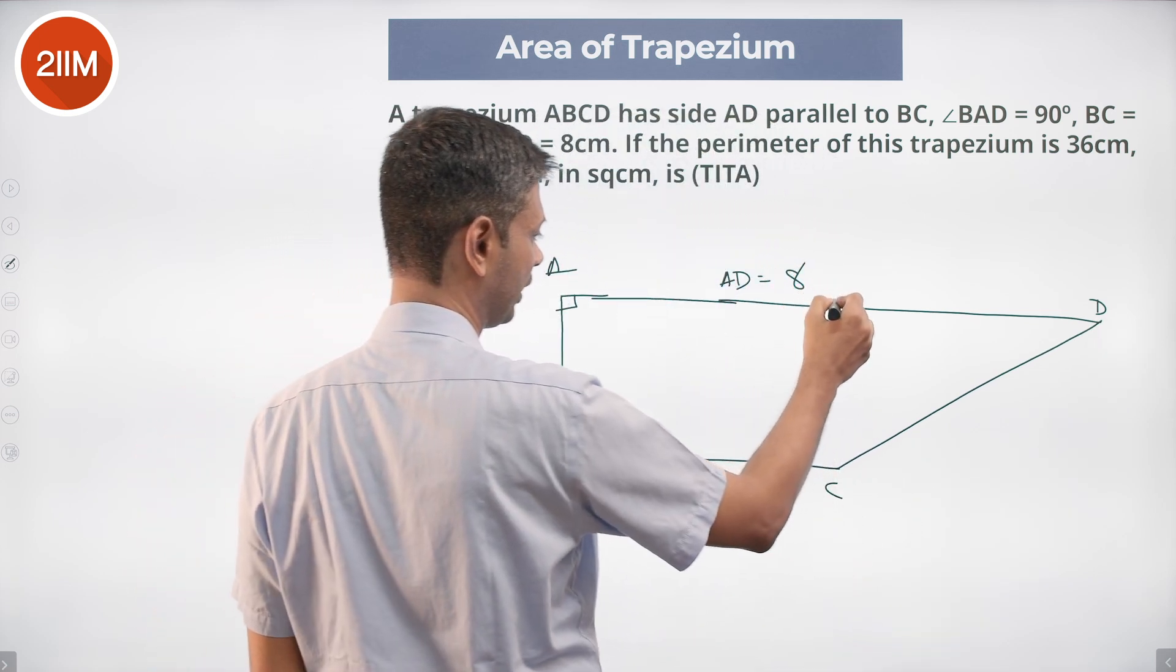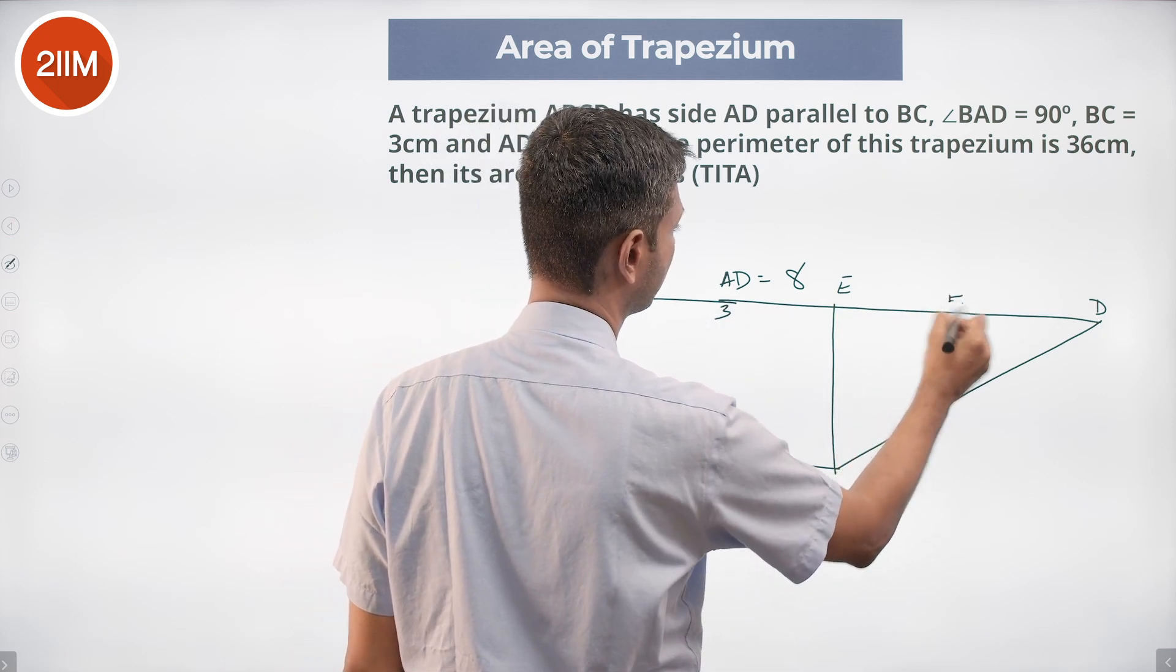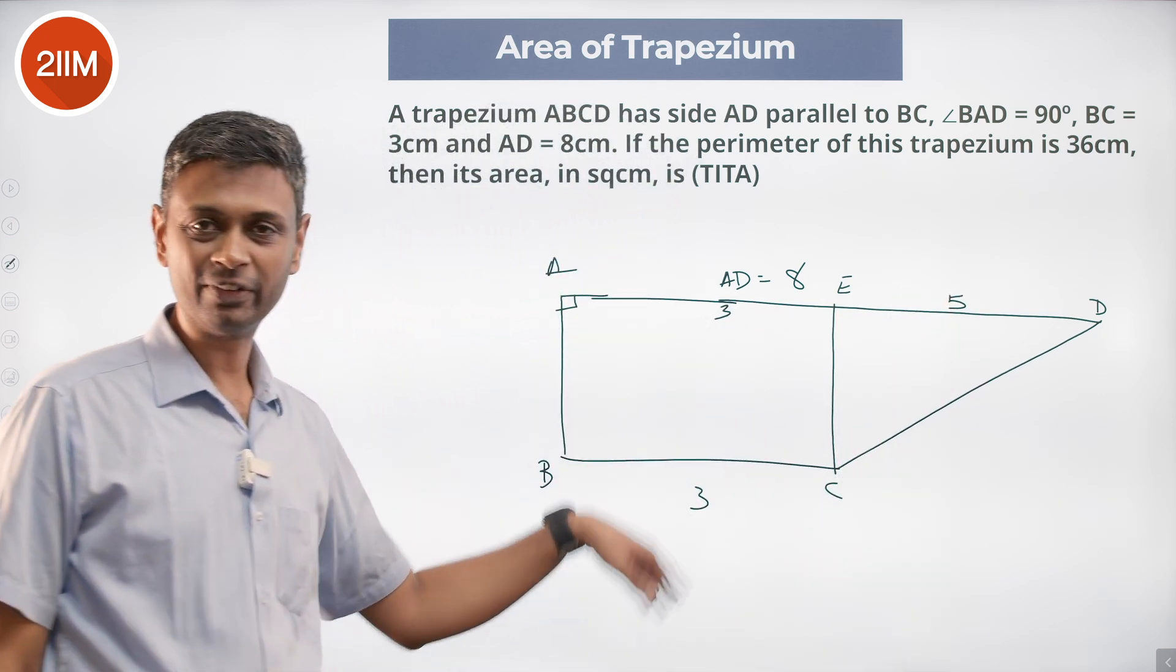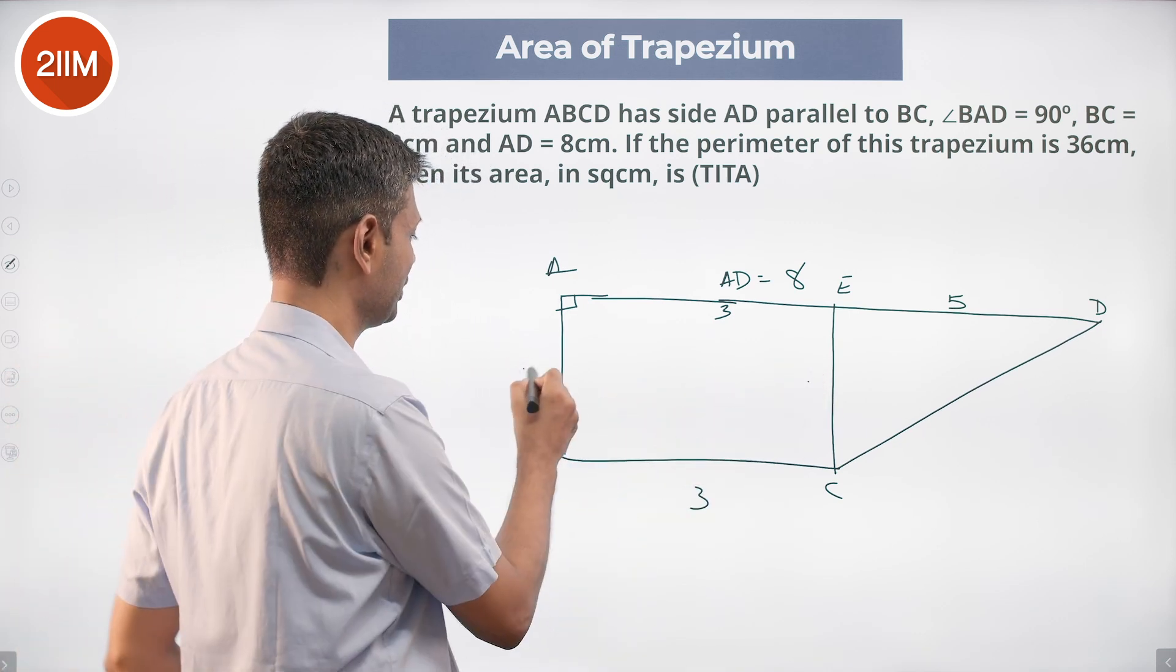I'm going to draw a line like this, call it E. This is 3, AD is 5. Call this as height h, call this as x.